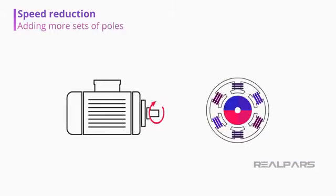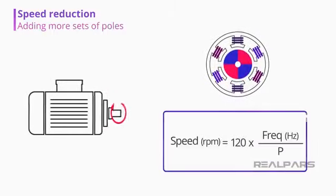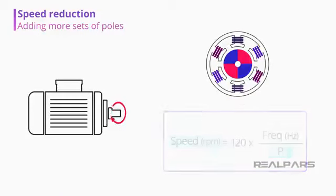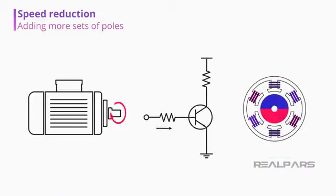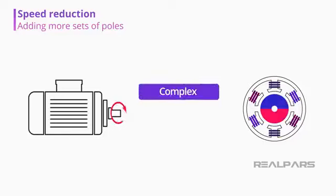Adding more sets of poles reduces the speed without altering it electrically. Currently, there are transistor systems that allow for poles inside motors to be turned on and off. However, those systems can be complex and don't provide fine control.